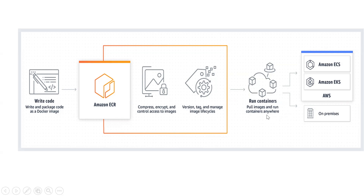Using that image you can pull it and run containers. You can run those containers on AWS, on your on-premises infrastructure, on EKS (Amazon Elastic Kubernetes Service), or on Amazon ECS (Elastic Container Service). In the next video we'll have a comparison between ECS and EKS — which one to use and which one we will be using. For today we'll just focus on ECR.